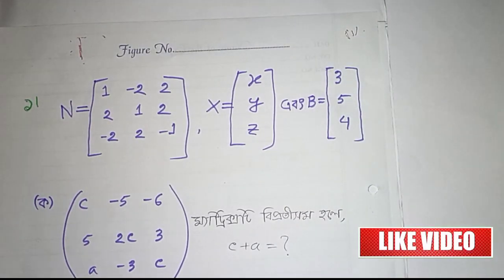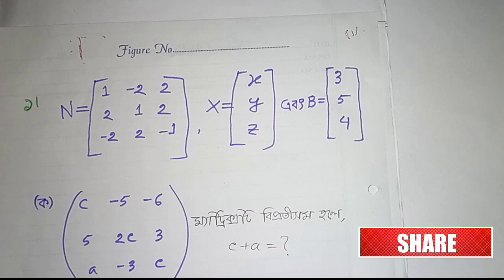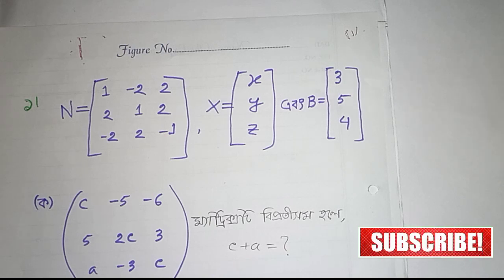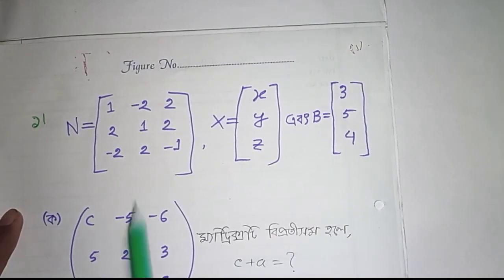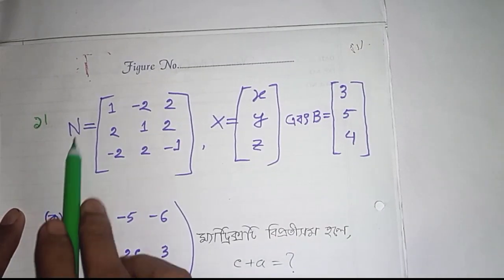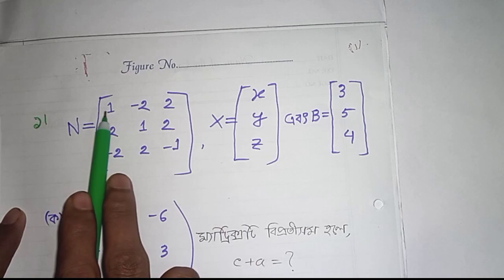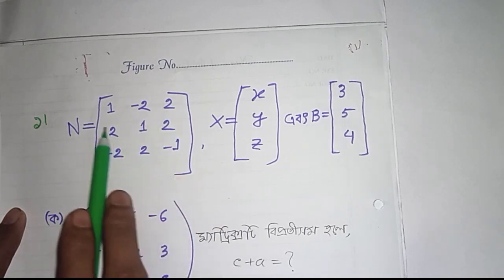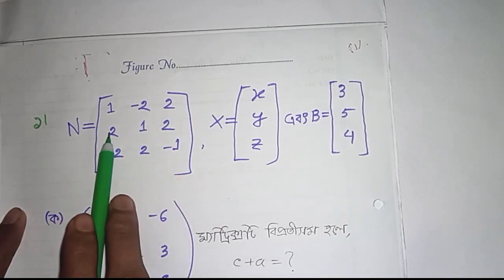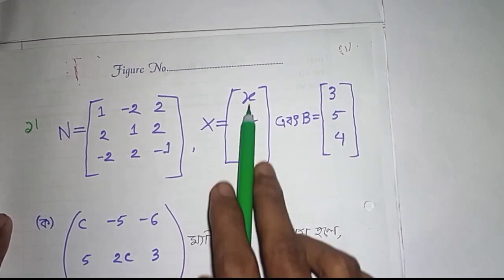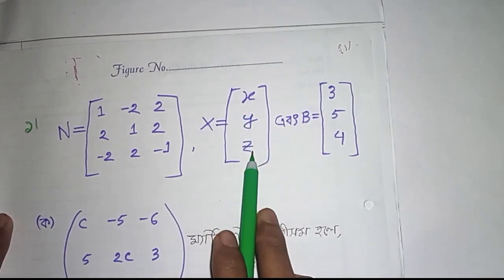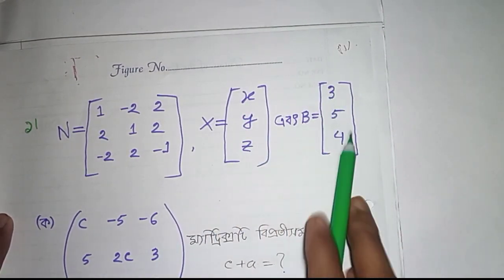Assalamualaikum. I am going to remove the otherwise and put it at the personal level — the personal technique. If you are committed, there is a one minus two two. This is a two one two minus two, two minus one, x equal to xyz, and b equal to 3 5 4.